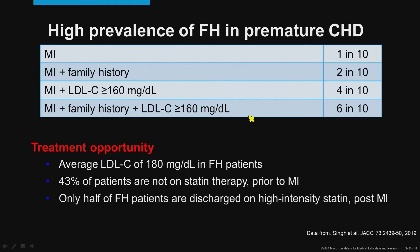In this study, the prevalence of FH was relatively high in individuals that had a premature MI, and the prevalence increased if they also had family history, had an LDL greater than 160, and had a combination of these factors. The average LDL of these patients was 180 milligrams per dL, but only half of these individuals were on statin therapy prior to the MI, and only half of the patients were discharged on a high-intensity statin.